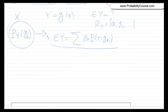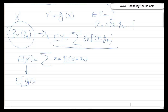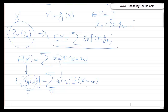Here is the rule. The expected value of X is the sum of xk times the probability that X equals xk. This rule says that the expected value of any function of X can be written as the same sum — all we do is replace xk by g of xk: it becomes the sum of g of xk times the probability that X equals xk. Basically, you don't need to find the probability mass function of Y. Even if you only have the probability mass function of X, you can directly find the expected value of Y.